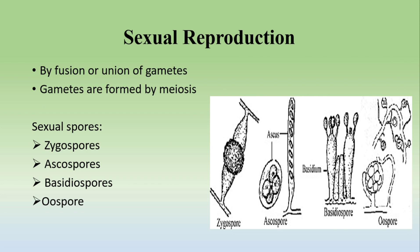Sexual reproduction occurs by the fusion of male and female gametes. The different sexual spores are zygospores, ascospores, basidiospores, and oospores. These gametes are formed by meiosis and are haploid spores. The male and female gametes combine to form a diploid zygote, which then develops into individual hyphae and subsequently into fungi, continuing the cycle. The diagram shows the different images of zygospores, ascospores, basidiospores, and oospores.